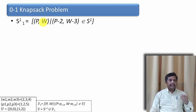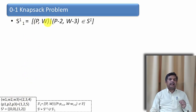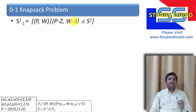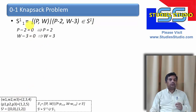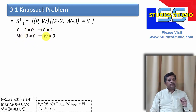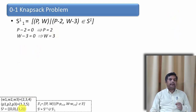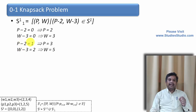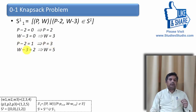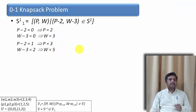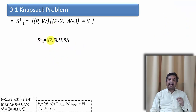Now I take the second item, whose weight is 3 and profit is 2. Using the same formula: (p, w) such that (p minus 2, w minus 3) belongs to S1. S1 has (0,0) and (1,2). Taking pair (0,0): p minus 2 = 0 gives p = 2, and w minus 3 = 0 gives w = 3 — so pair (2, 3). Taking pair (1,2): p minus 2 = 1 gives p = 3, and w minus 3 = 2 gives w = 5 — so pair (3, 5). Therefore S1,1 = {(2, 3), (3, 5)}.